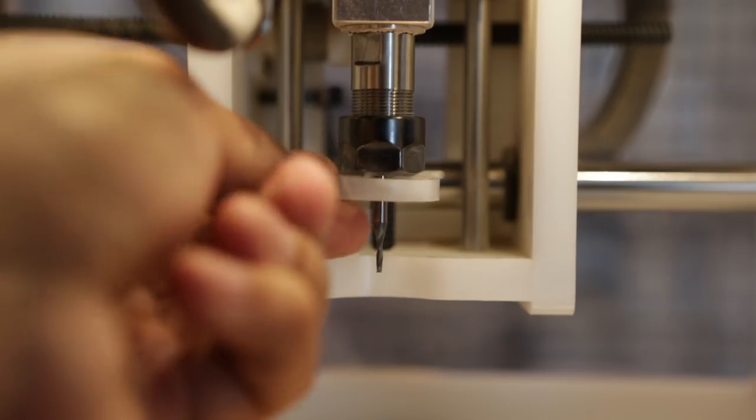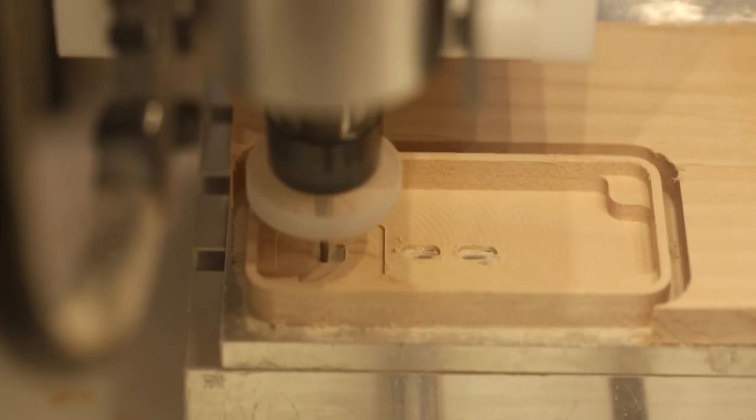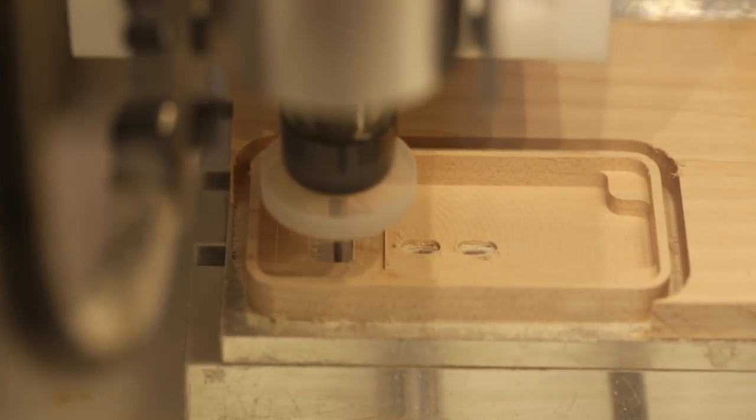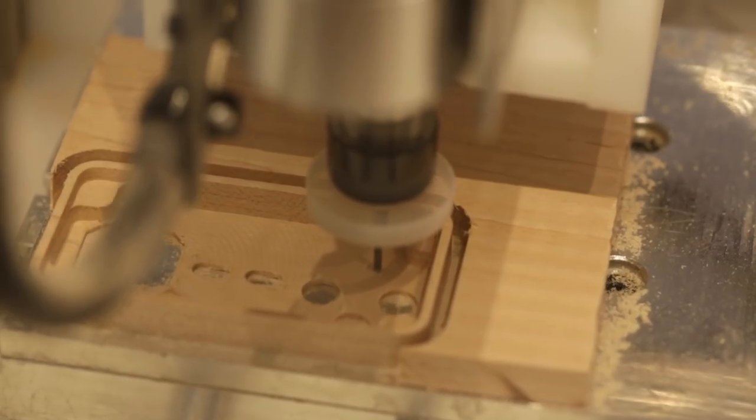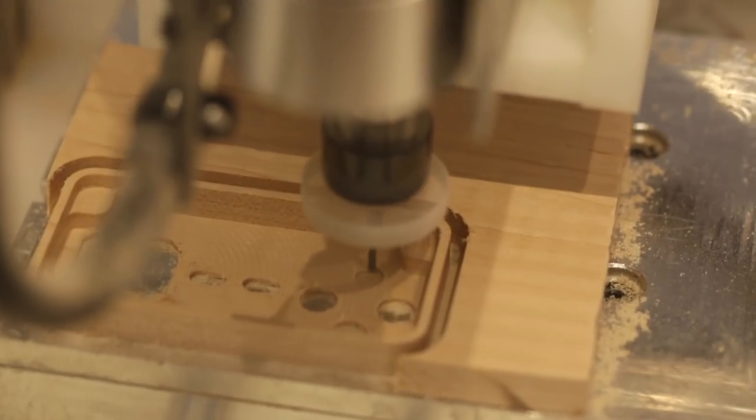Once that's done, I needed to switch the tool out for a 1⁄16 inch flat end mill. I used a pocket operation to create the cutouts for the buttons. This makes concentric patterns and step overs to clear out the selected geometry.